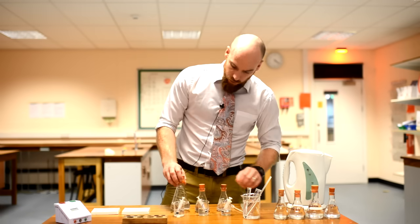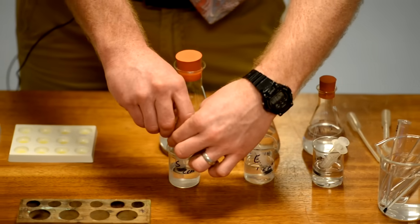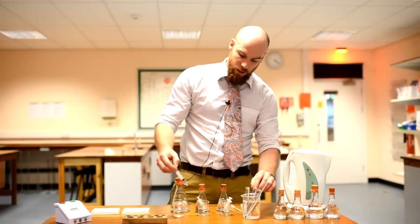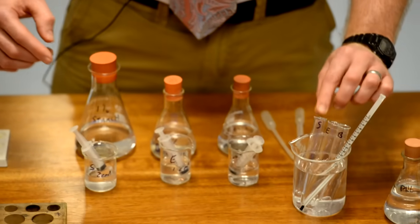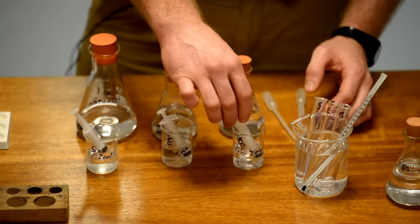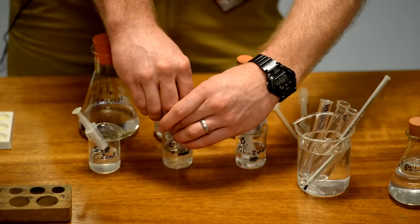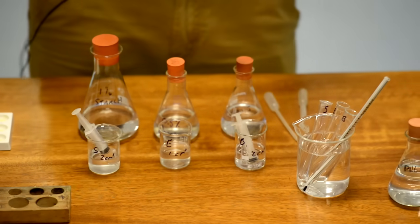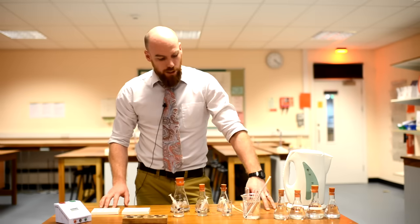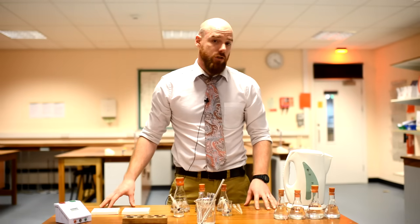So to do this practical I took two centimetres cubed of starch solution using my syringe here and I transferred that into the test tube labelled S for starch. I did the same for the buffer solution, two centimetres cubed, and now I'm just going to do one centimetre cubed for the enzyme. Centimetres cubed is the same as millilitres. It's a good idea to get those solutions into your three tubes early on and allow the temperatures to adjust.